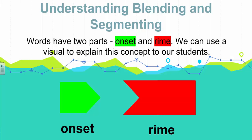Words have two parts: onset and rhyme. The onset is the sound or sounds before the vowel in a word. The rhyme is the vowel and the consonants that follow. In kindergarten, we focus on CVC words, which have a fairly simple onset and rhyme pattern. For example, in the word 'bed,' 'b' is the onset and 'ed' is the rhyme. This distinction can help us explain the concept of blending and segmenting to our students.